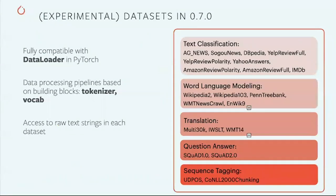We have also rewritten a few existing datasets in TorchText, and we will release them in 0.7. The new datasets shown here are fully compatible with data loader in PyTorch. Users will also have the flexibility to build the data processing pipeline based on our standard tokenizer vocabulary blocks. So, here is a list of the new datasets. Once it is released, please give them a try and give us feedback.